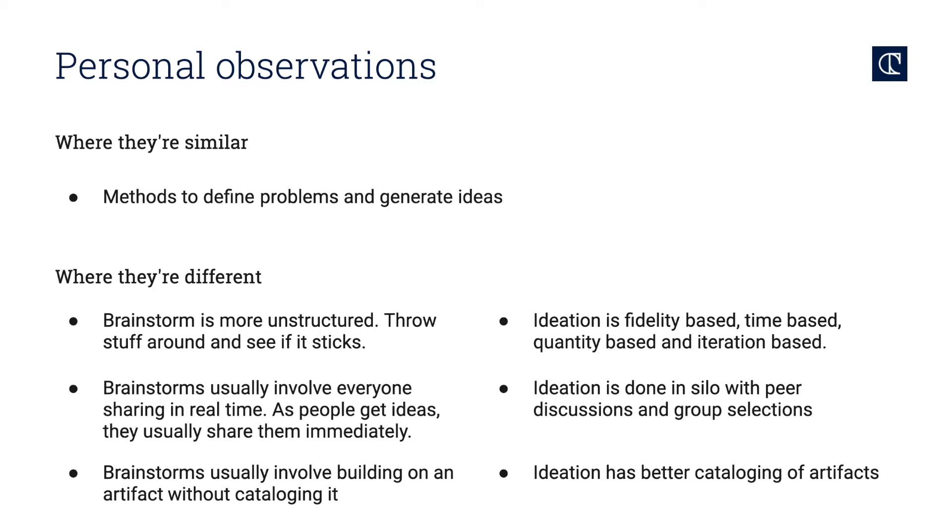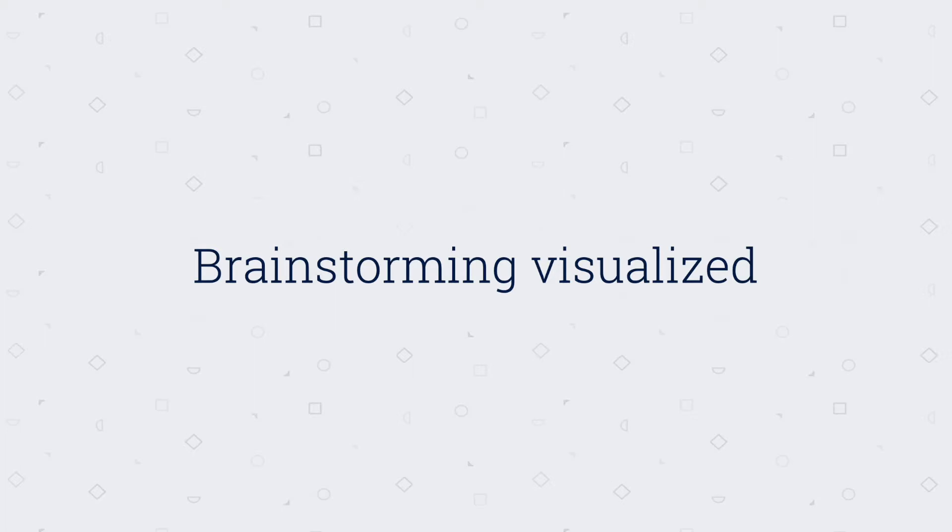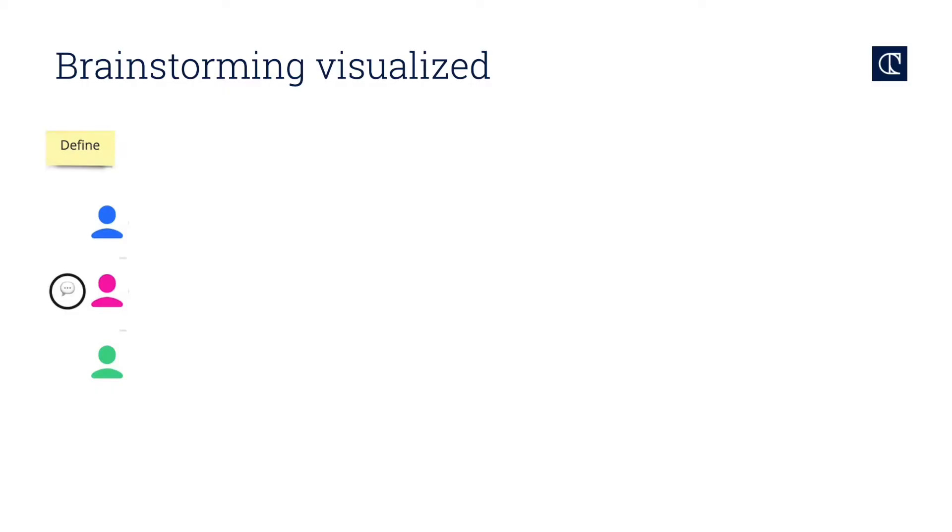So what does brainstorming look like when we actually visualize it? Usually at the beginning of the conversation there's a definition portion where somebody's going to frame a problem, and then everybody simultaneously is going to say something out loud. Blue in this case is saying we could solve it by doing a circle, pink is saying we can solve it by doing a triangle, and green is saying we can solve it by doing a star. And then pink says I'll take your circle and I'll make it bigger, and then blue says okay perfect I'm going to combine your idea with mine, and then green throws another idea, et cetera, where people are just kind of sharing what's in their head, possibly doing a bit of drawings here and there.